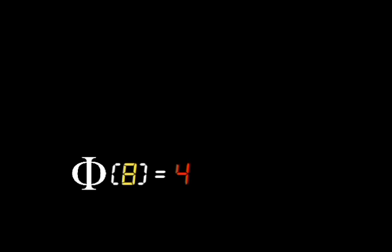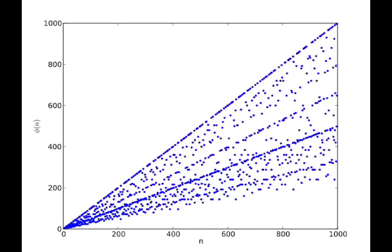What's interesting is that calculating the phi function is hard except in one case. Look at this graph. It is a plot of values of phi over integers from 1 to 1,000. Now, notice any predictable pattern.